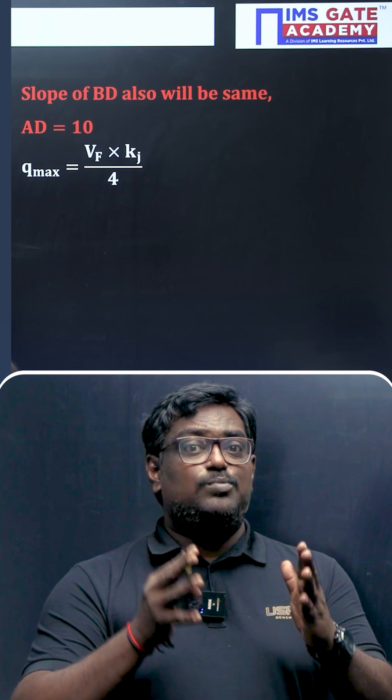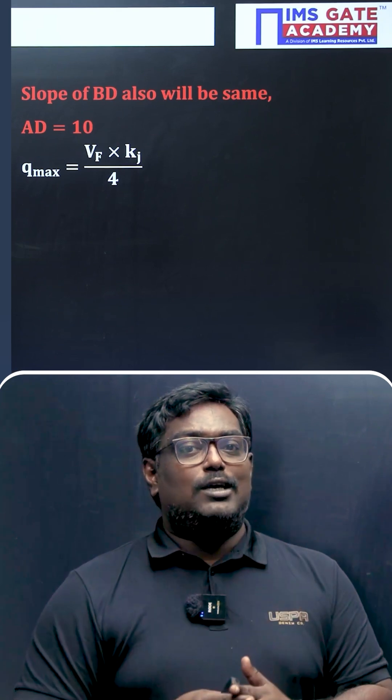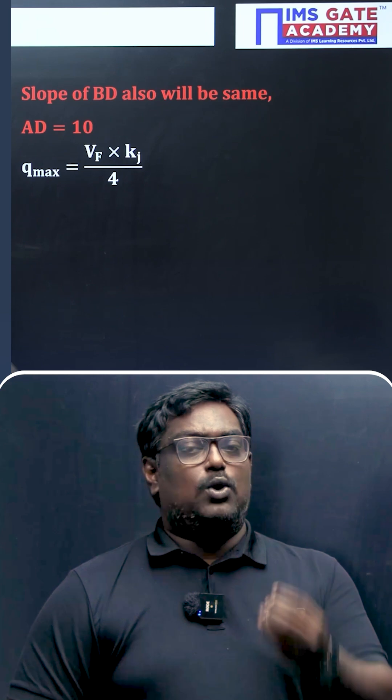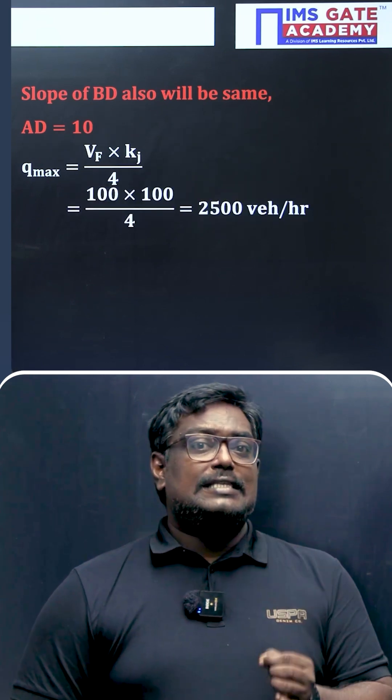In Greenshield model, as speed and density varies linearly, we have the formula: q_max (that is, maximum traffic flow) equals vf into kj upon 4. So my dear students, on plugging this value, kj is...